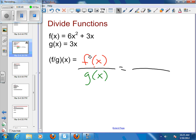I'm going to put my fraction line up there. My f of x is 6x squared plus 3x, and my g of x is the 3x. And then I ask myself, does this thing simplify? Well, I might have to factor a little bit to get this into a more simple form.